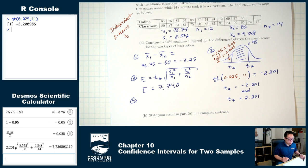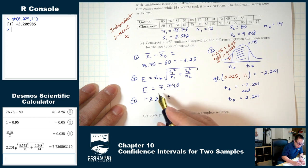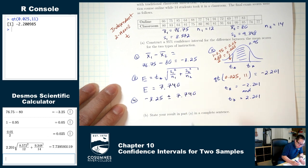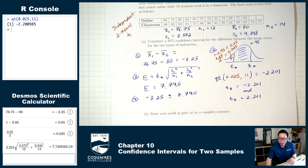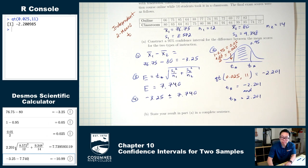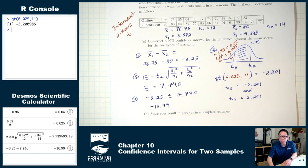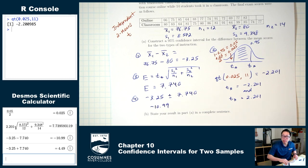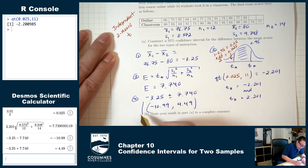Step four: construct the interval. Starting with x1-bar minus x2-bar = negative 3.25, plus or minus 7.740. The low number is negative 3.25 minus 7.740 = negative 10.99. The high number is negative 3.25 plus 7.740 = 4.49. That's our confidence interval: (−10.99, 4.49).